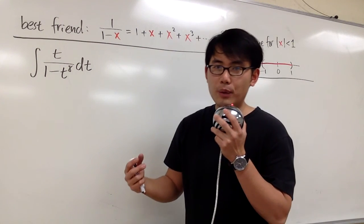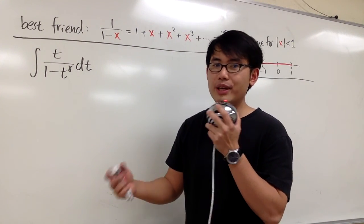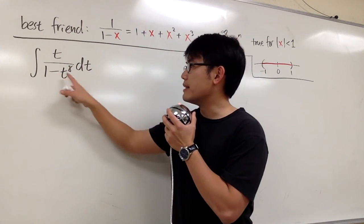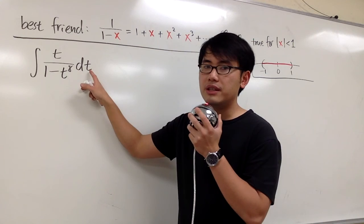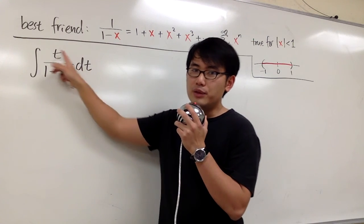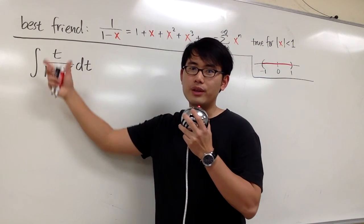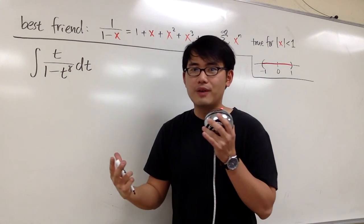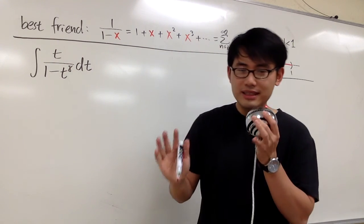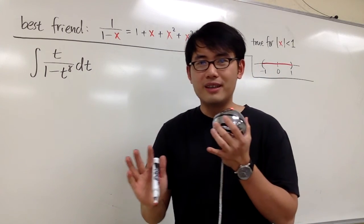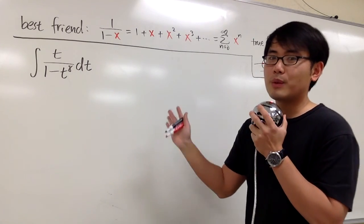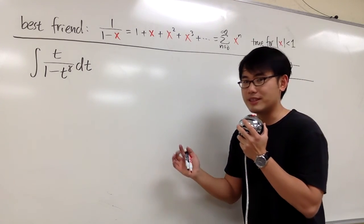We are going to use a power series to integrate t over 1 minus t to the 8th power dt. If you just decide to integrate this by itself and try to come up with a nice function, it's going to be extremely hard. That's why we want to use a power series to do this.